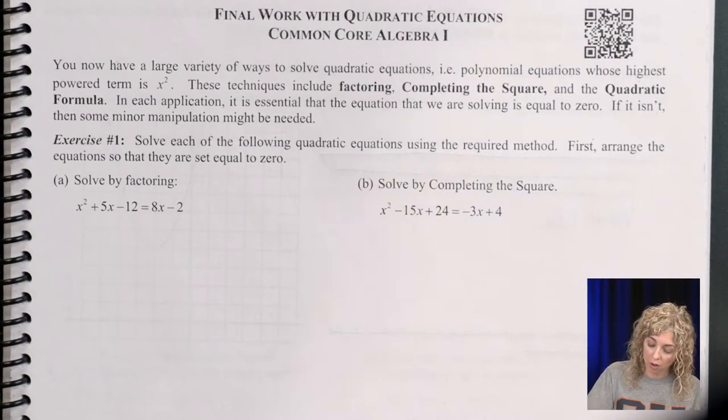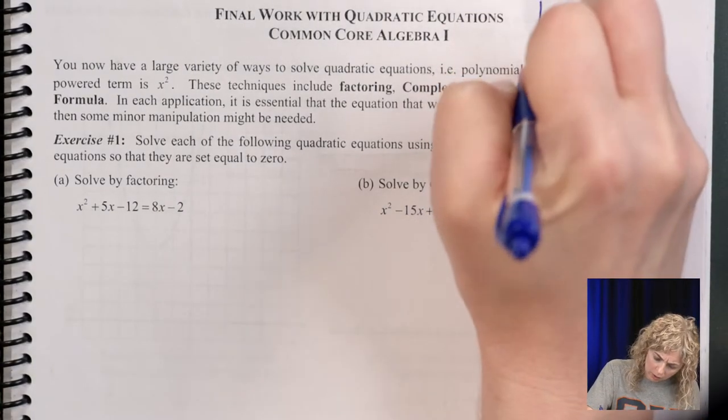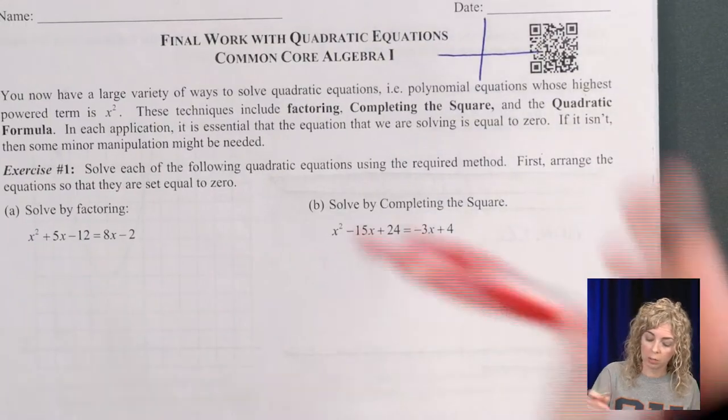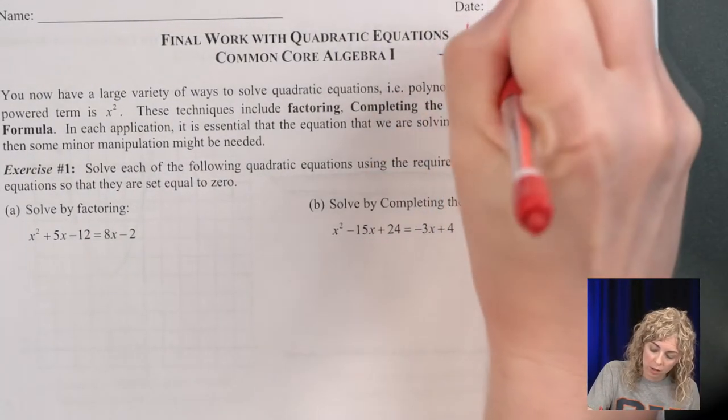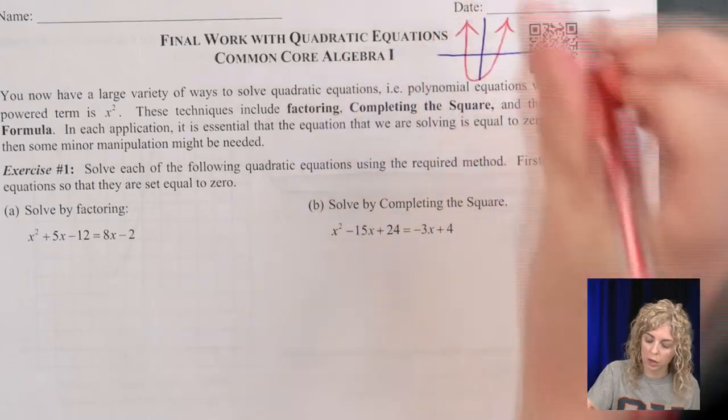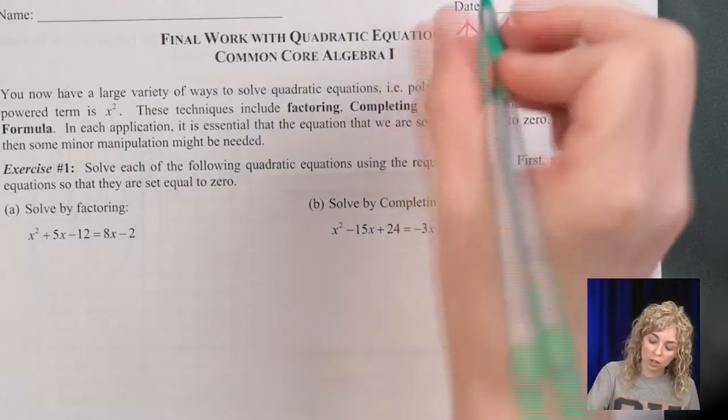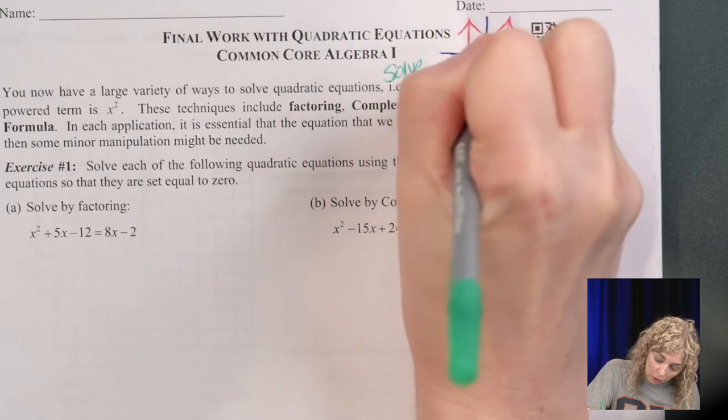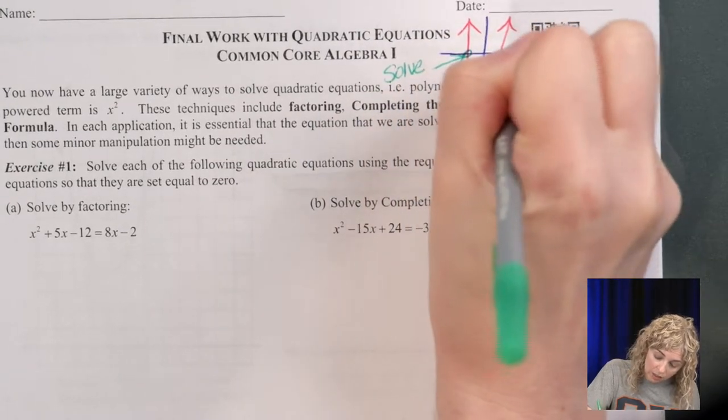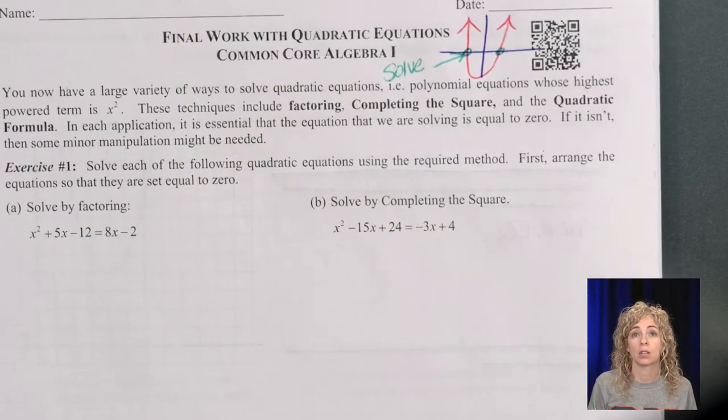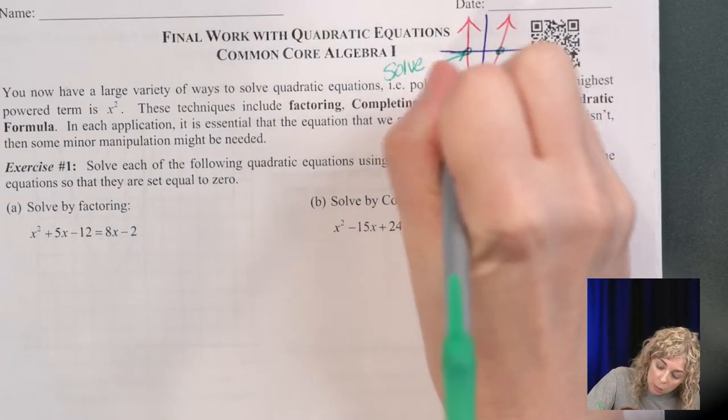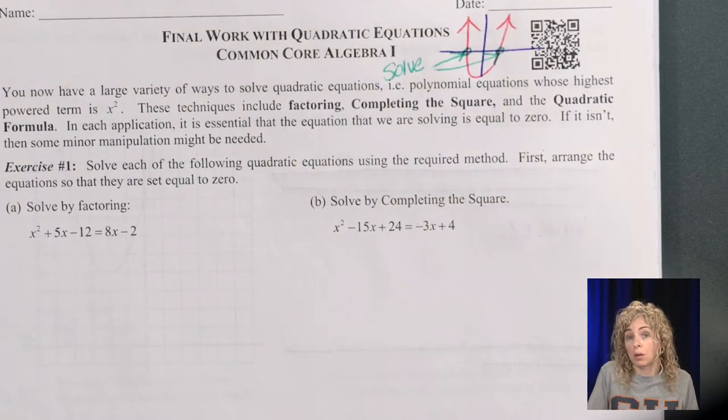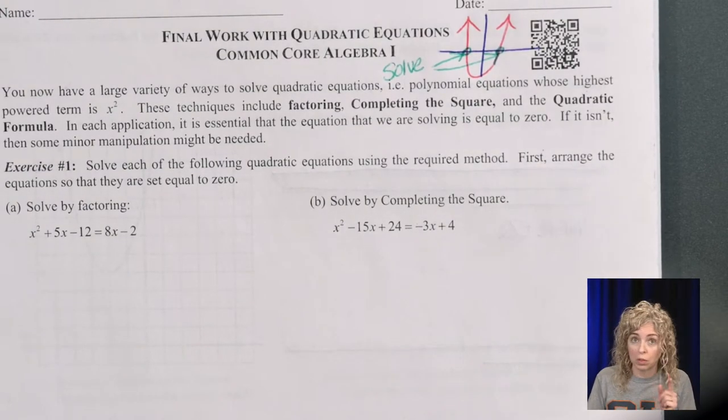Because remember, when we're solving, I'm just going to draw a picture up here. So let's say my curve is right here in red. Here's a quadratic equation graph, the parabola. When you're solving, you're looking for where it crosses the x-axis, the roots. And there's typically two roots, but it may only cross once, or it may not cross at all and there's no real roots.